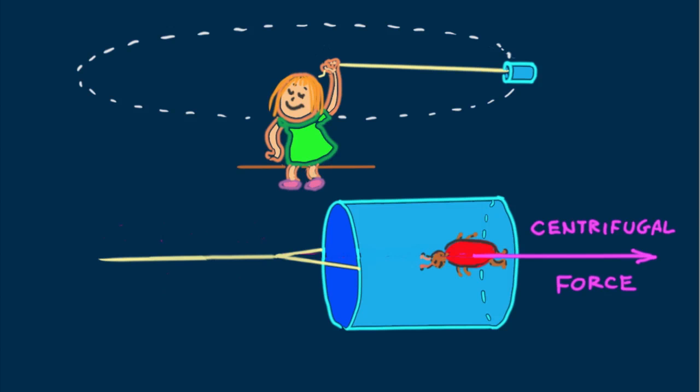She calls this outward force a centrifugal force. It obeys the same equation as centripetal force. Its magnitude in newtons is the same as the magnitude of the centripetal force. Whereas centripetal force is center-seeking, centrifugal force is center-fleeing or away from the center.